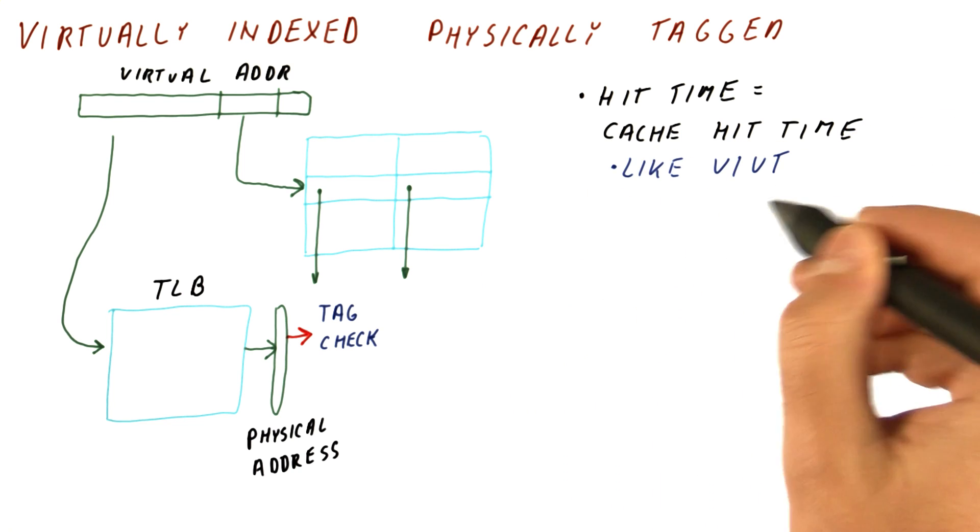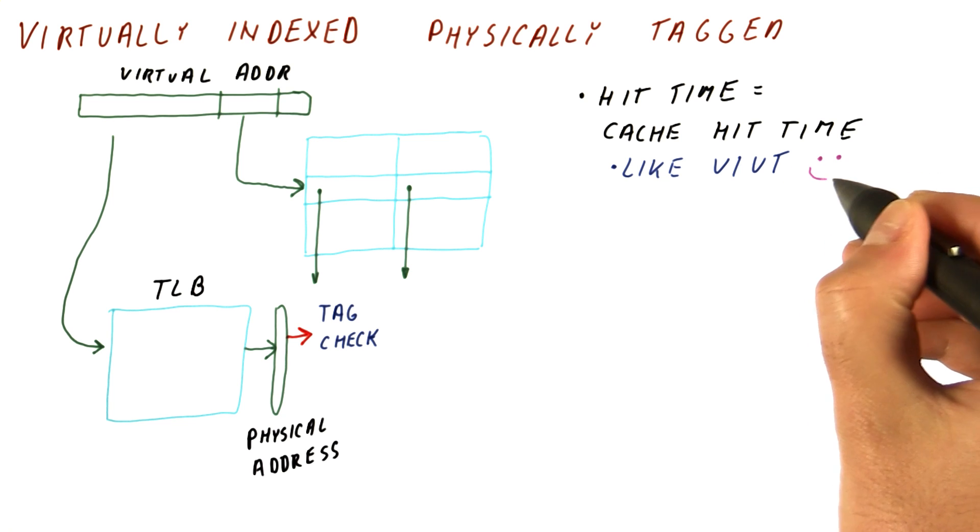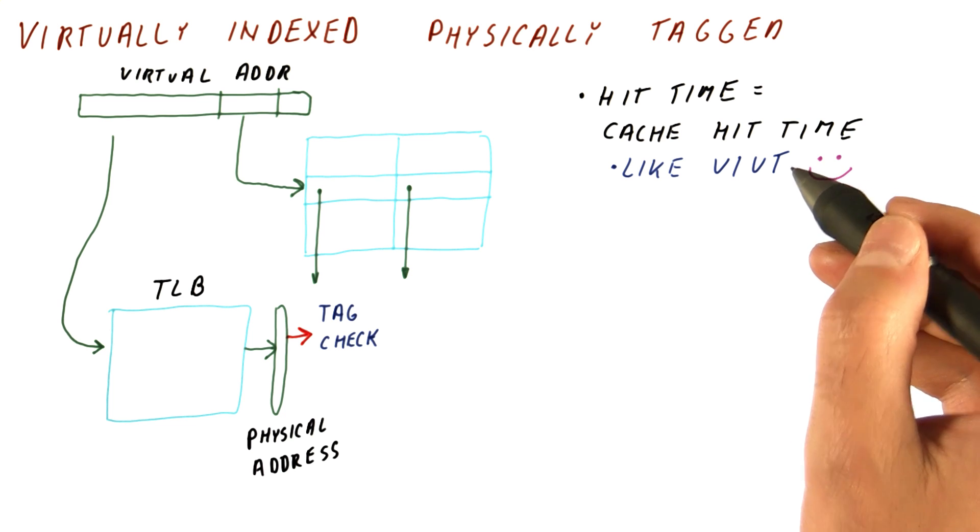So this is just like the virtually indexed, virtually tagged cache. And we like that. We get the speed advantage of the virtual caches with this type of cache too.